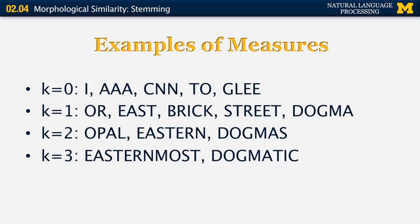We can also have long words with K equal to two, three, and larger. For example, the word 'easternmost' has a measure of three because it has vowel sequence EA followed by consonant sequence ST (first part), then E followed by RNM (second part), and finally O followed by ST (third part).